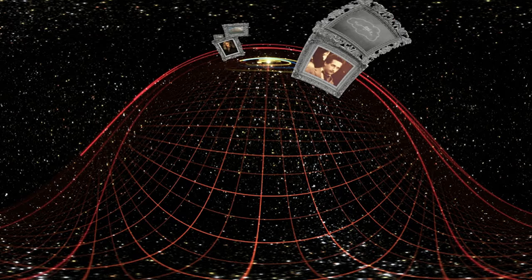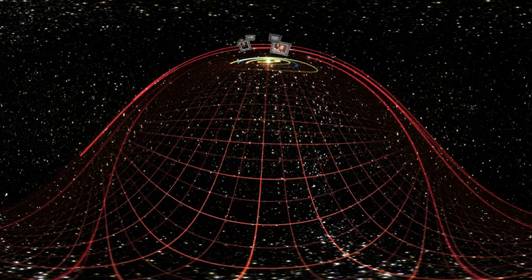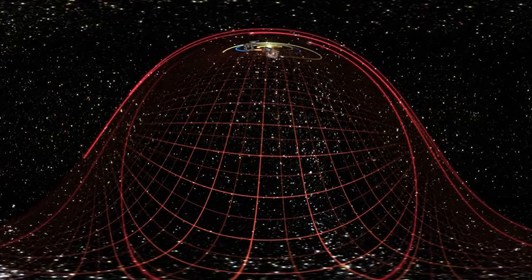you can think of a grid being laid down on it, and whenever there's a massive object in some region of space, it warps or deforms that region of spacetime and the grid deforms.